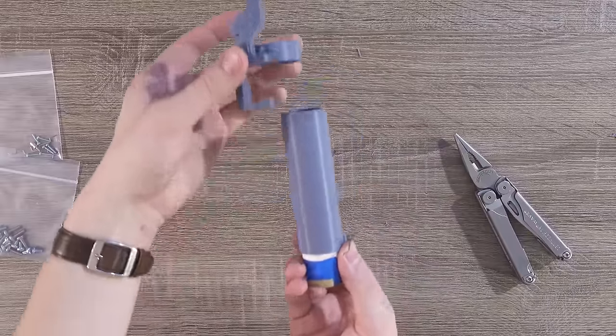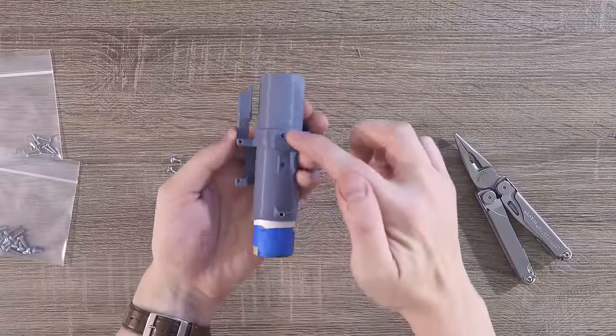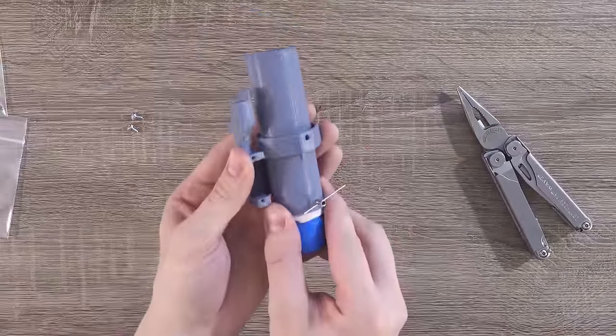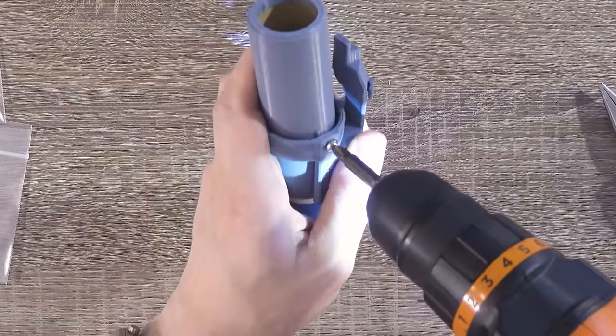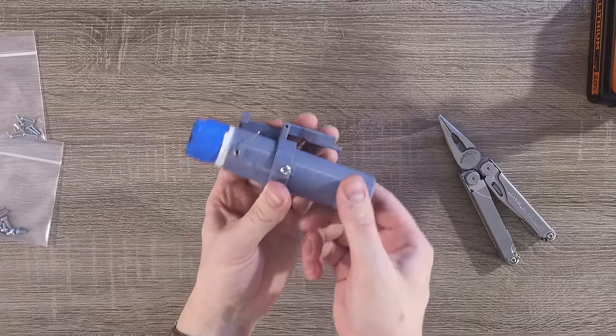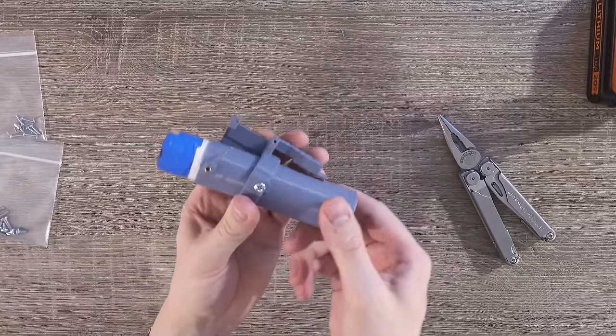With that taken care of, slide the inner gimbal over the top of the motor mount tube. Make sure those screw holes line up, and then it's time to screw it in with the two small M3.5 screws. Your mount should be able to rotate freely back and forth like this, even if there's a little bit of friction.